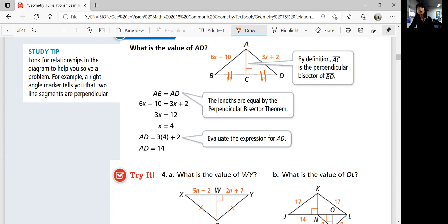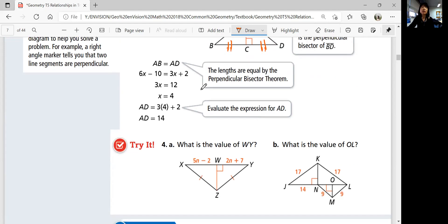Because X is 4, AD, you're not done. AD is 3x plus 2, so you're going to plug in 4 into X and figure out what AD is. It's 14. The value of AD is 14. So let's try number 4, A and B.